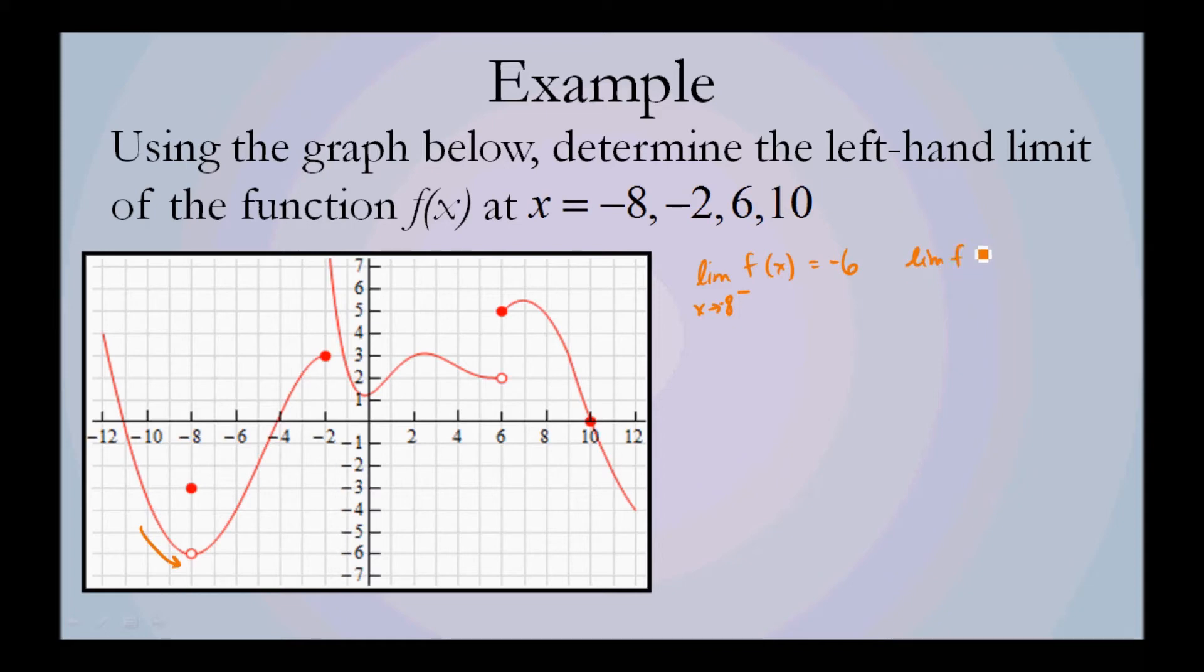The limit of f(x) as x approaches -2 from the left: if we're at -2 coming from the left, equals 3.